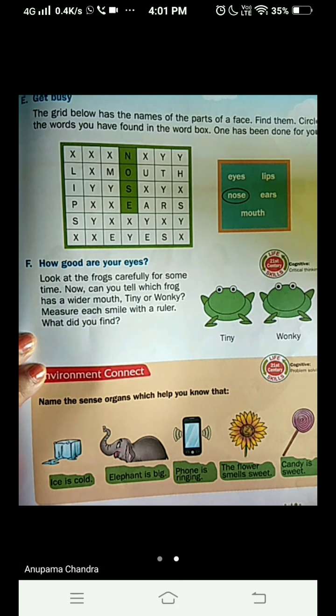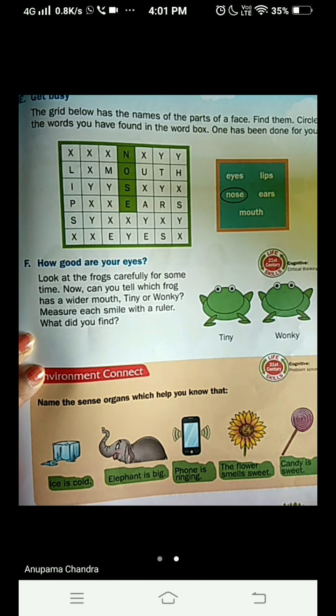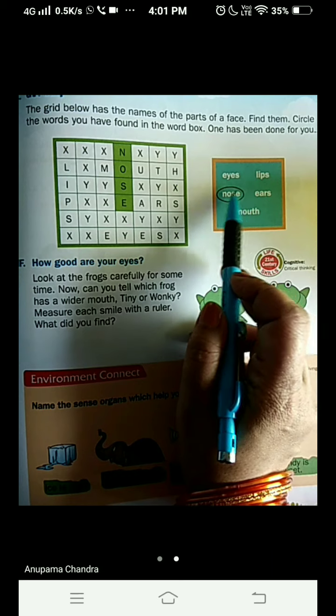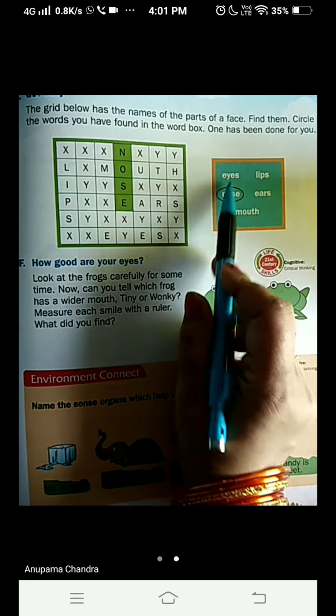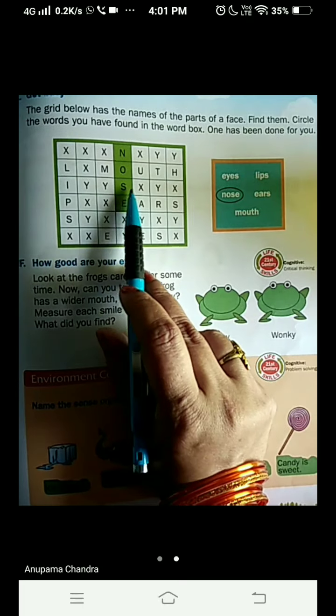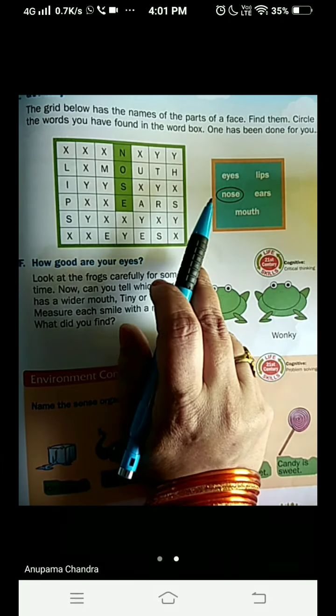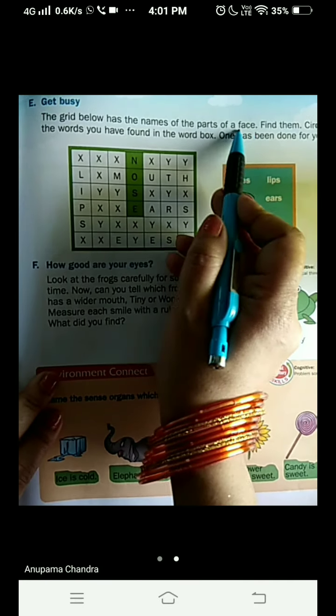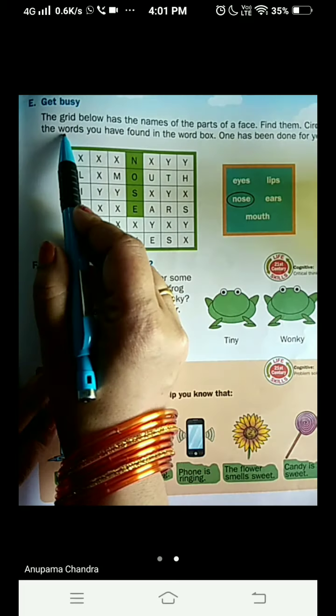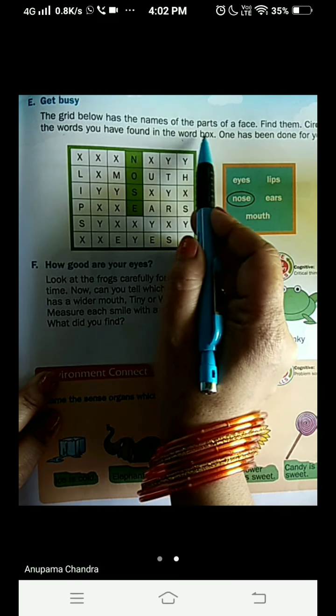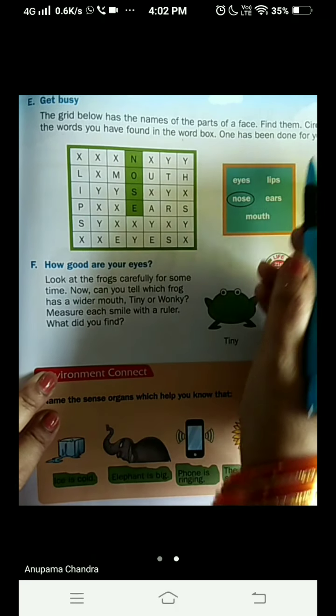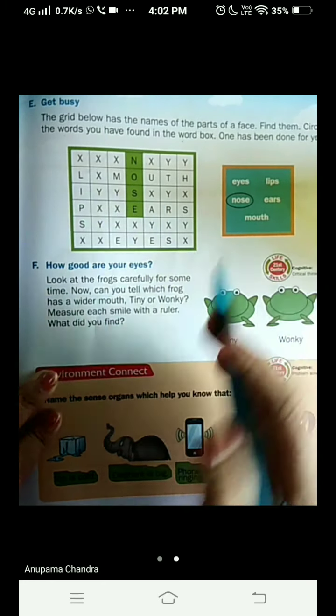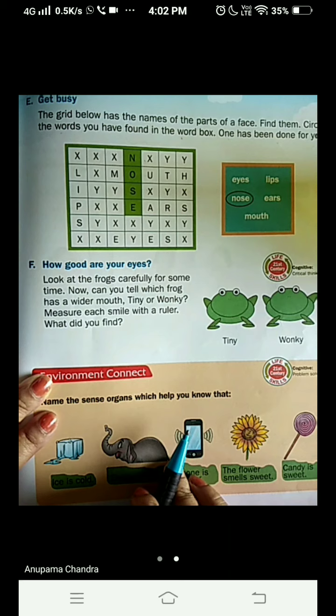Now we are on page number 179 and here is the crossword given for you. And the words are given in the box next to it and these are the words you have to find in the crossword puzzle. Let's read the question. The grid below has the names of the parts of a face. Find them, circle the words you have found in the word box. One has been done for you.